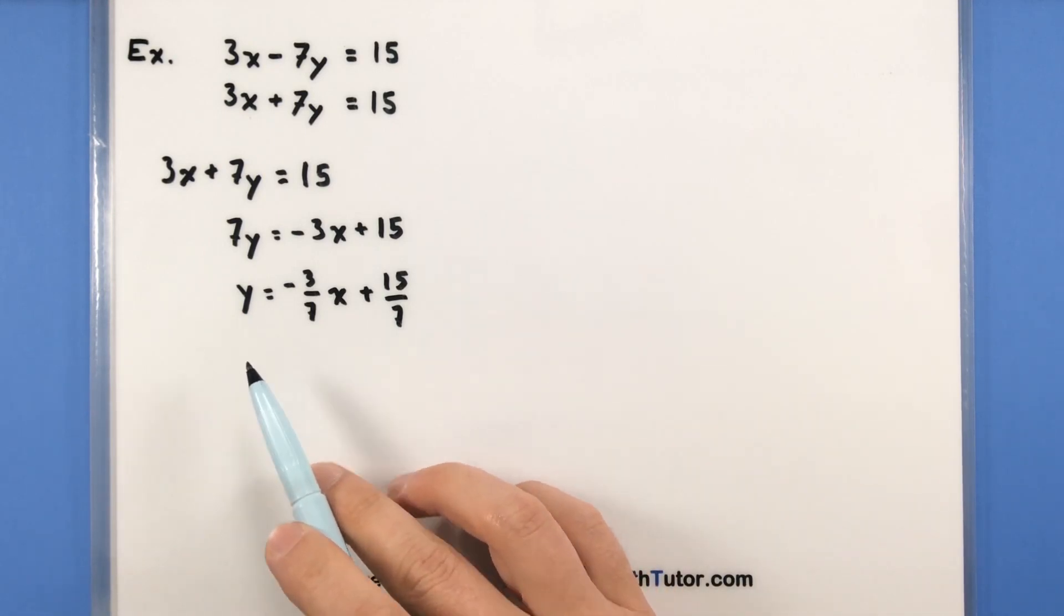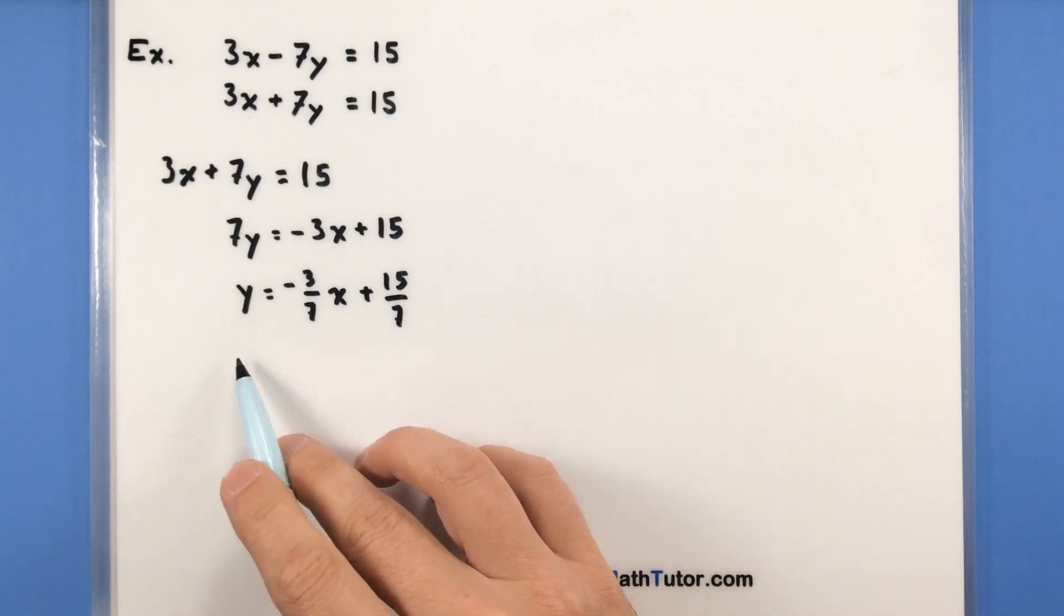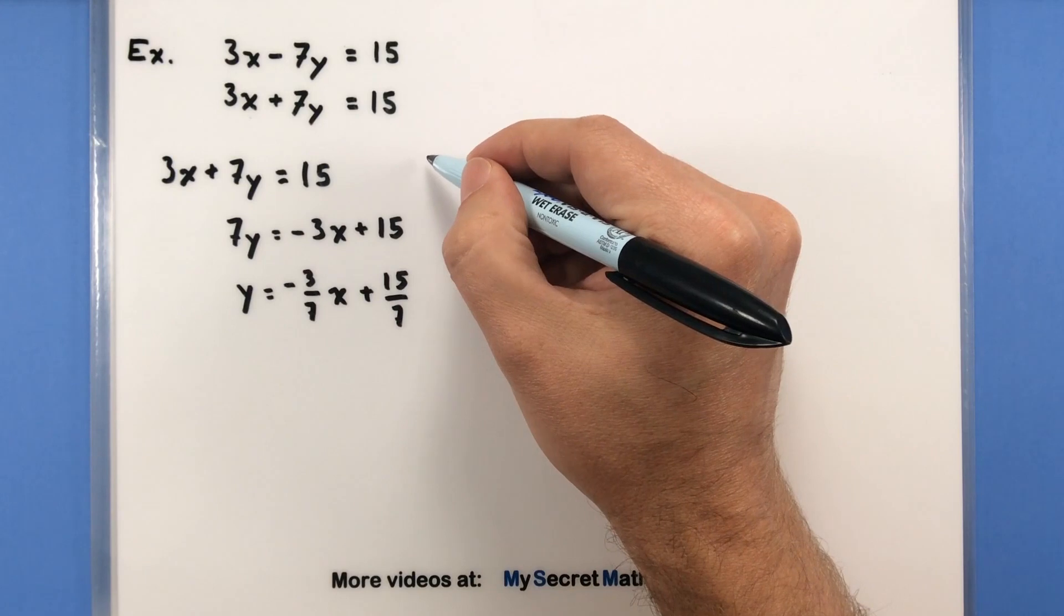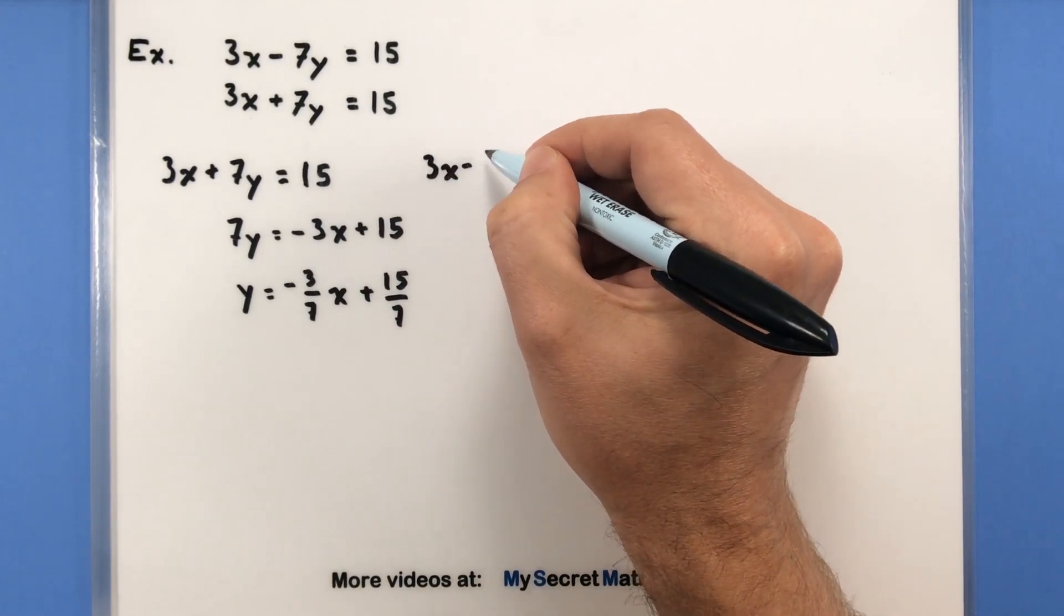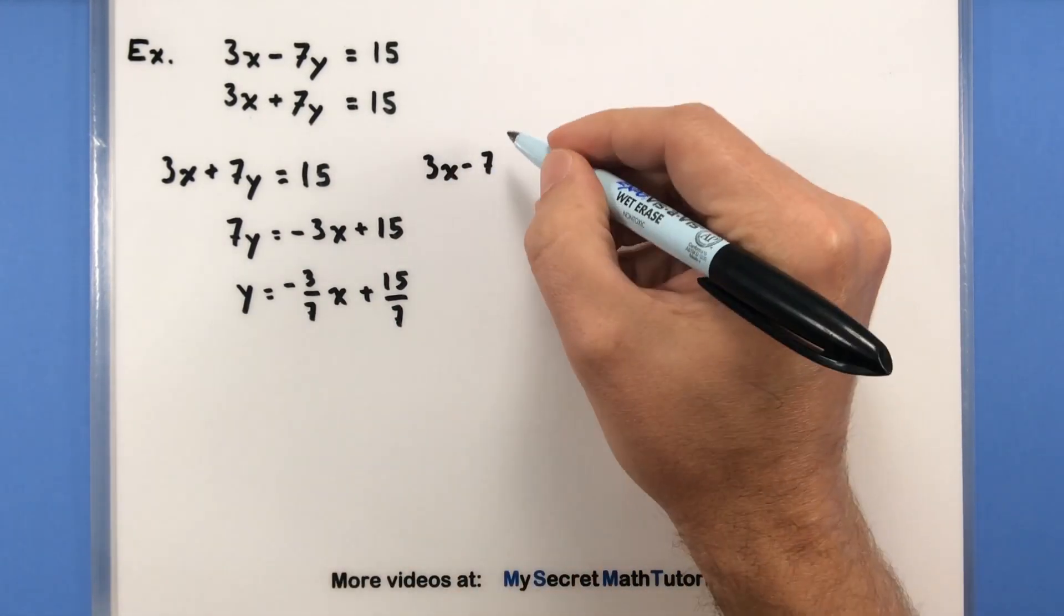Now that we've isolated y, we're on to that process of substituting and solving. So let's substitute this into our first equation. 3x minus 7. And here's where we come across the y,